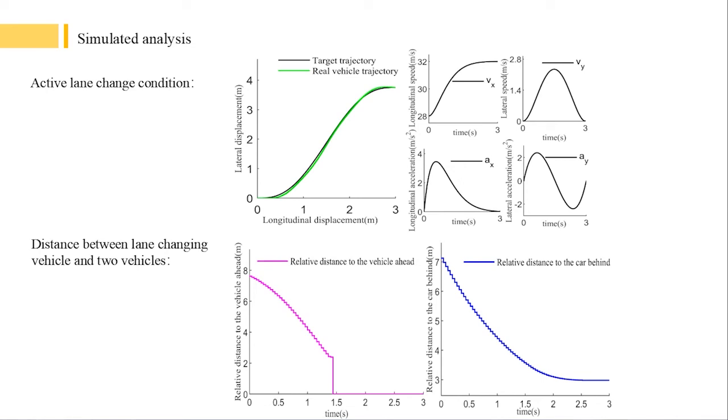And the distance between the vehicle behind the target lane and the vehicle is 7.2 meters. And the optimal lane change duration is calculated to be 3 seconds. All parameters meet the performance index requirements.